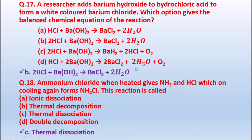Question 18: Ammonium chloride when heated gives ammonia (NH₃) + HCl, which on cooling again forms NH₄Cl (ammonium chloride). This reaction is called — ionic dissociation; thermal decomposition; thermal dissociation; or double decomposition. When ammonium chloride is heated and on cooling re-forms ammonium chloride, that is a thermal dissociation reaction. The correct answer is thermal dissociation.